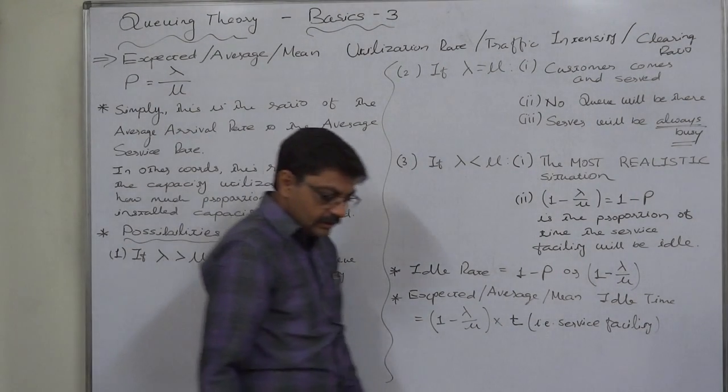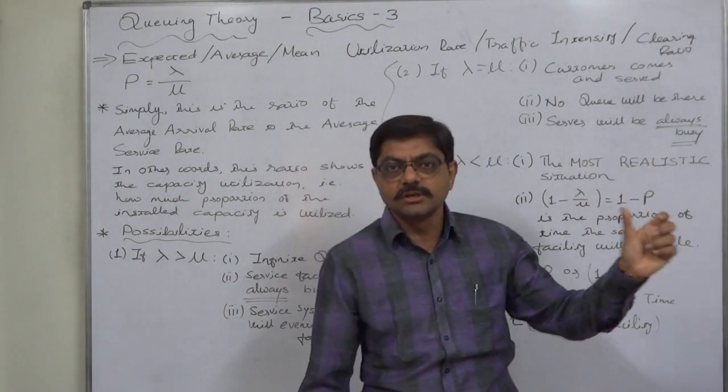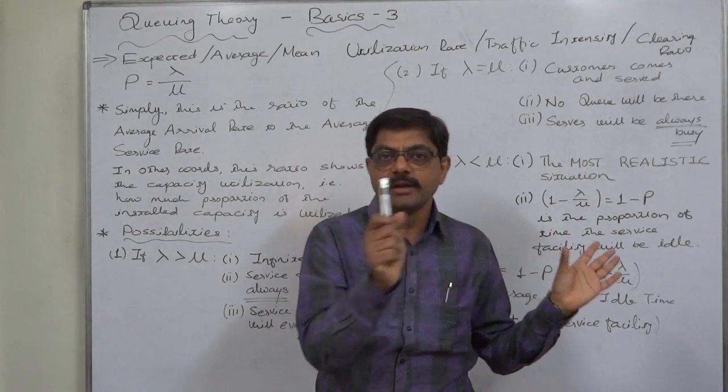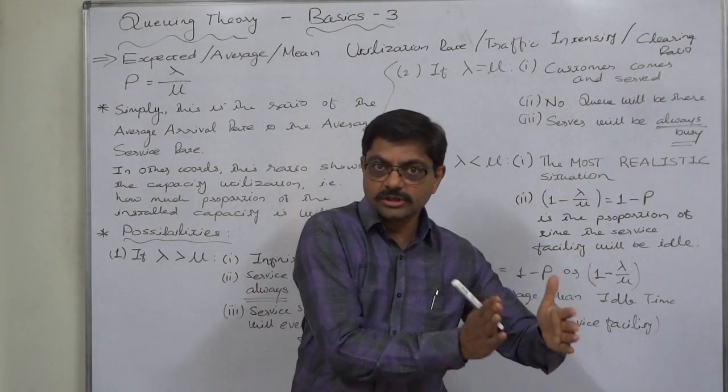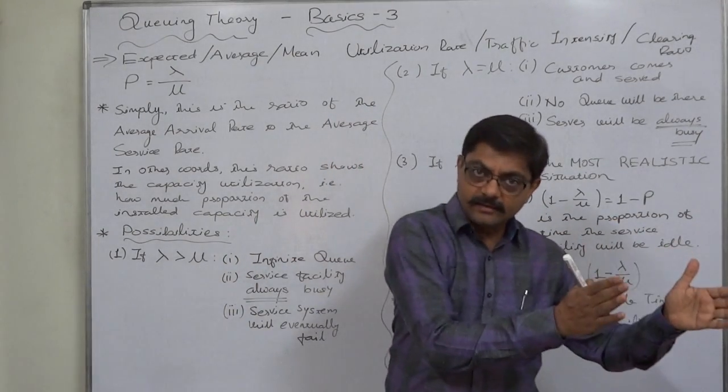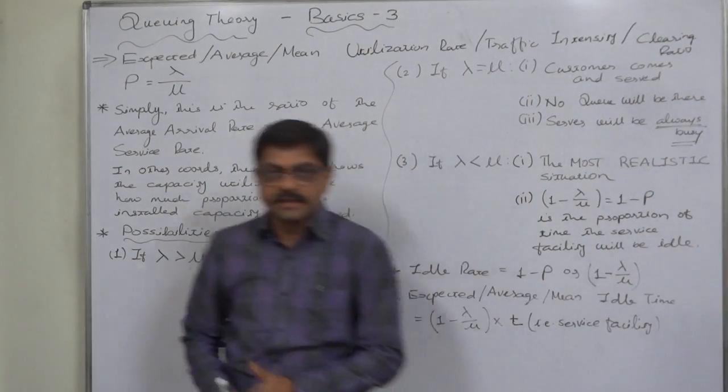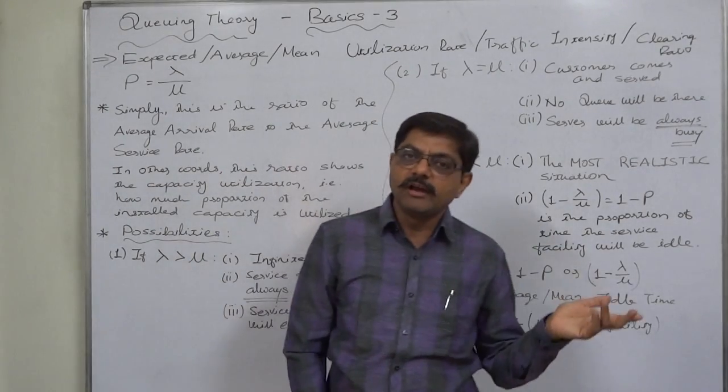That means after each hour there will be three unserved customers in the queue. Because within one hour 15 have arrived and only 12 have been served. So 3 unserved. At the end of the second hour there will be 6 unserved. At the end of the third hour there will be 9 unserved. At the end of the fourth hour there will be 12 unserved.